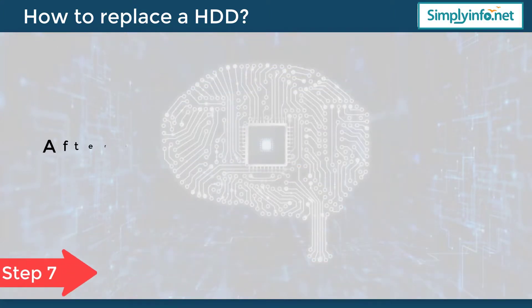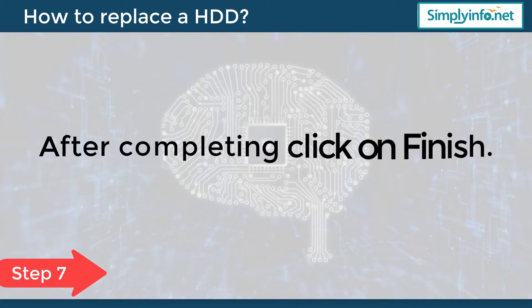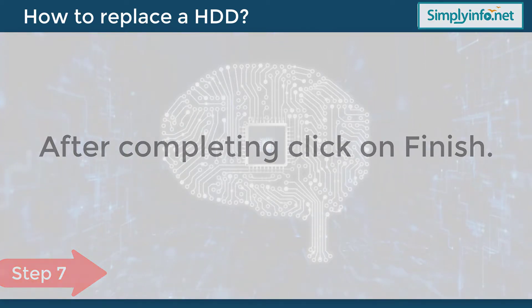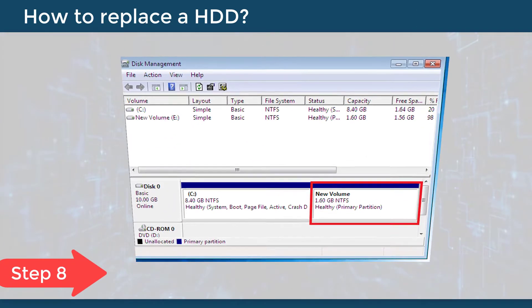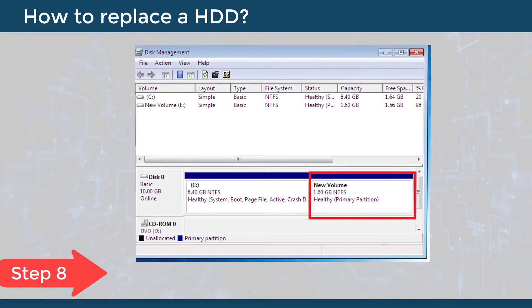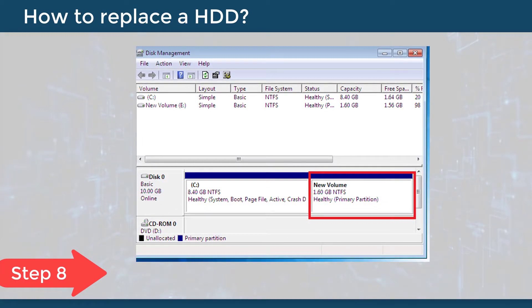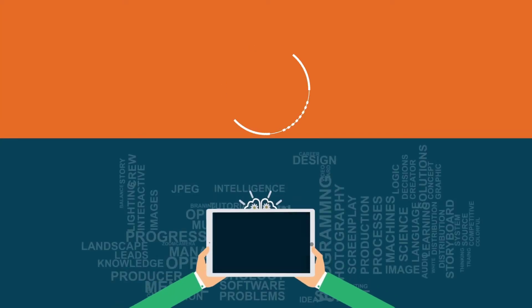Step 7: After completing the settings, click on Finish. Step 8: The new volume is now created, and that's how it is done.